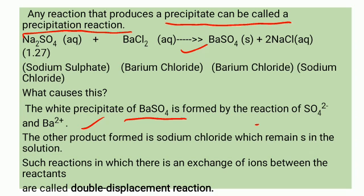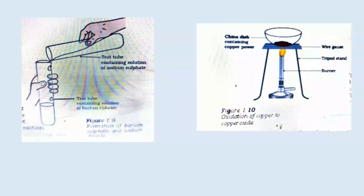The other product formed is sodium chloride, which remains in solution. Such reactions, in which there is an exchange of ions between the reactants, are called double displacement reactions. In the next activity, when we heat copper powder in a china dish, what do we observe?